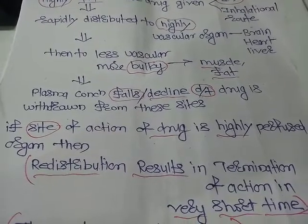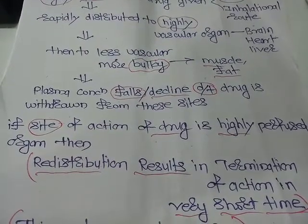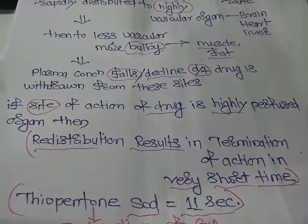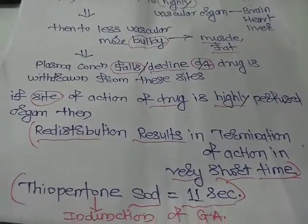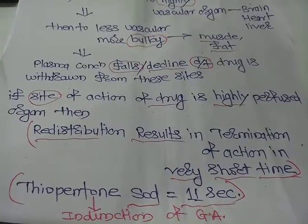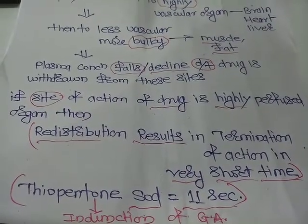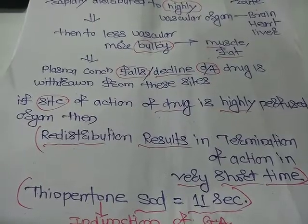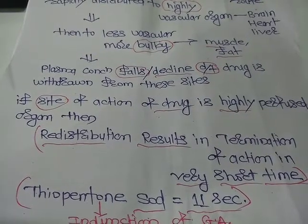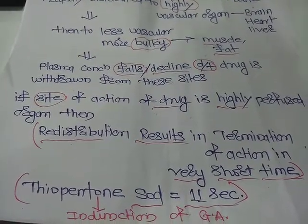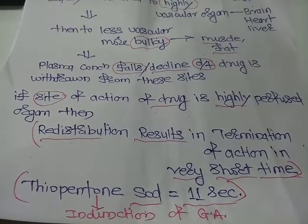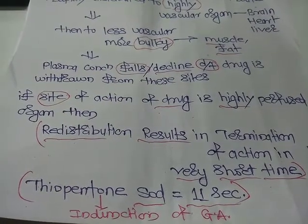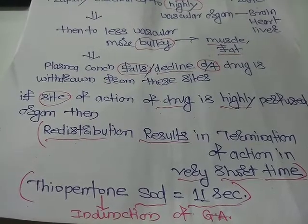If the site of action of the drug is a highly perfused organ like brain, heart, liver, or kidney — we will take the example of thiopentone sodium. Thiopentone sodium is an ultra-short acting barbiturate, and it is used for the induction of general anesthesia.